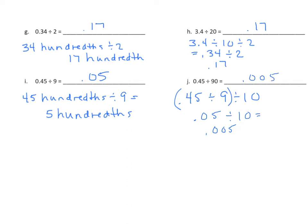Of course, we could do these in another order. In the case of J, we could have done divided by 10, divided by 9, and we would have gotten the same answer. I'm trying to relate the facts of the corresponding problems. Let's go on to some more.